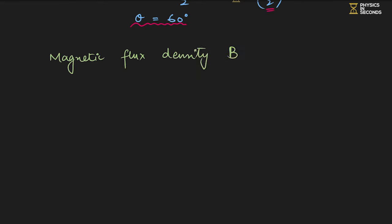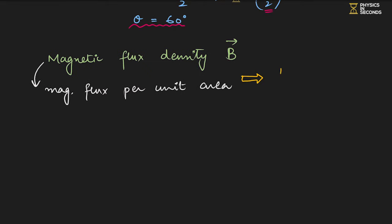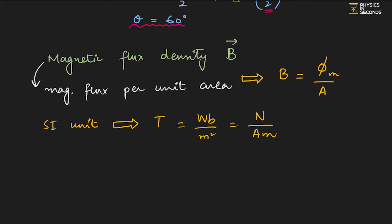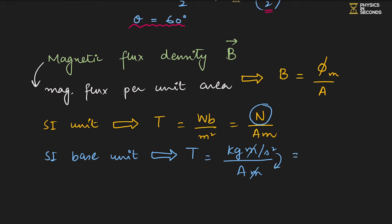Magnetic flux density is defined as magnetic flux per unit area: B = Φ/A, giving Tesla = Weber per metre². Its SI base unit is kg·s⁻²·A⁻¹ (derived from Newton per Ampere per metre, cancelling metre). Magnetic flux density and magnetic induction are the same quantity.